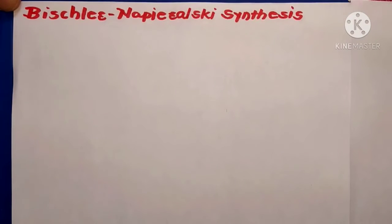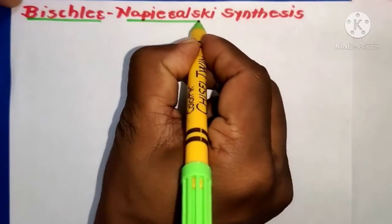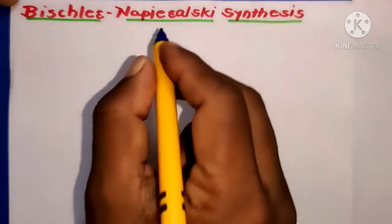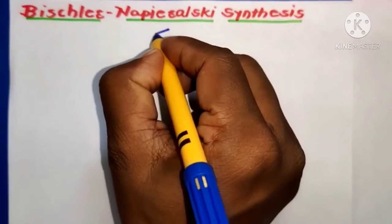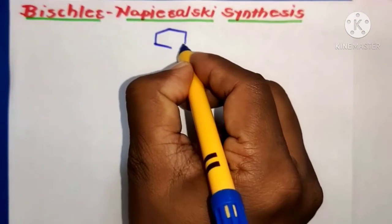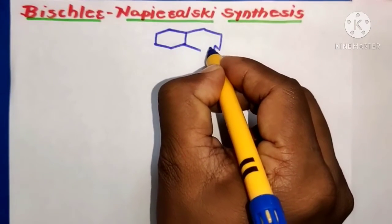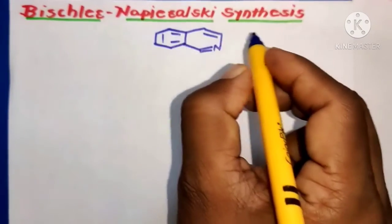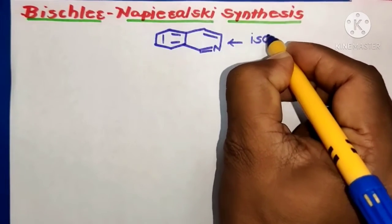Hello friends, today we are going to discuss the synthesis of isoquinoline by using the Bischler-Napieralski synthesis. The structure of isoquinoline consists of a benzene nucleus fused with pyridine — that is isoquinoline.